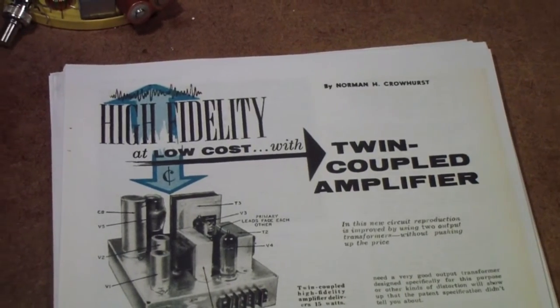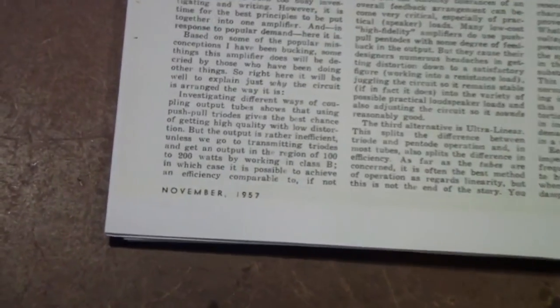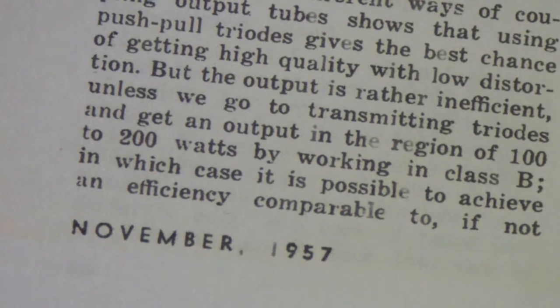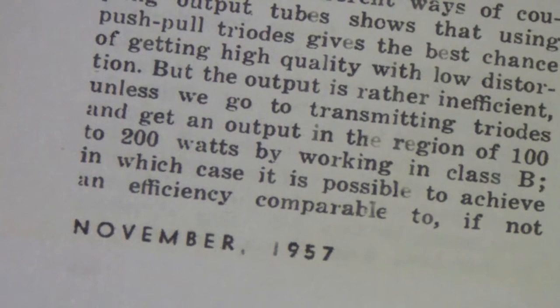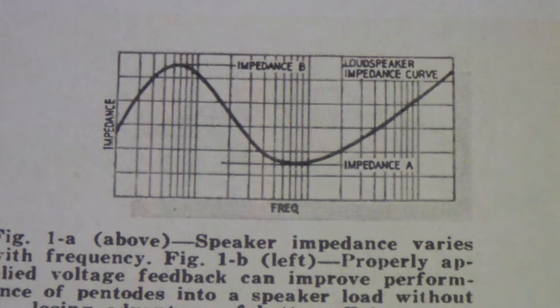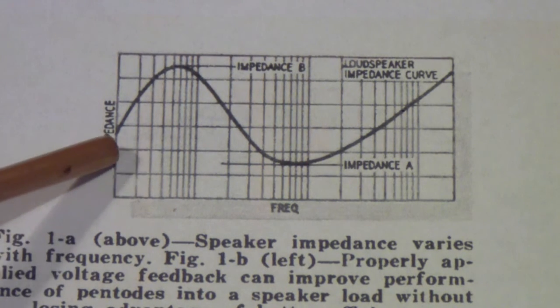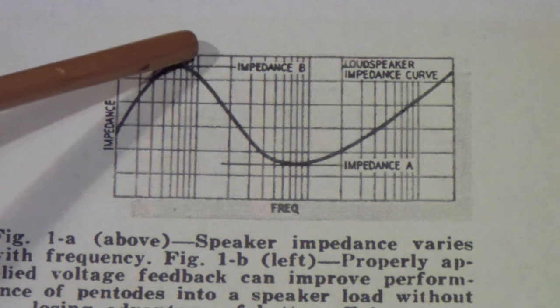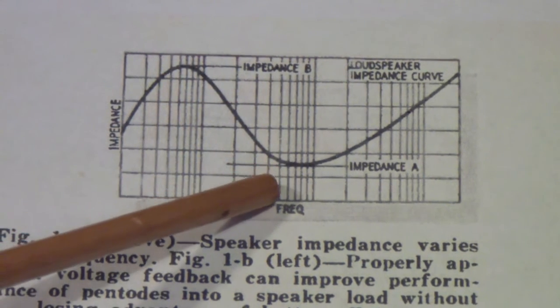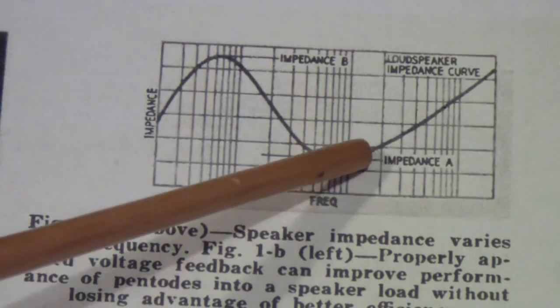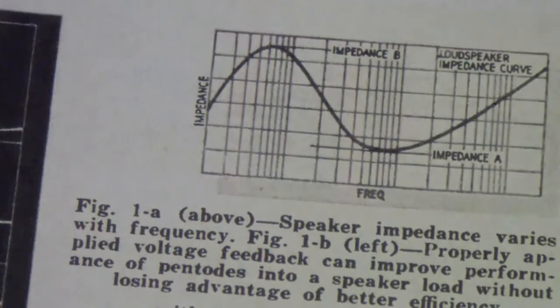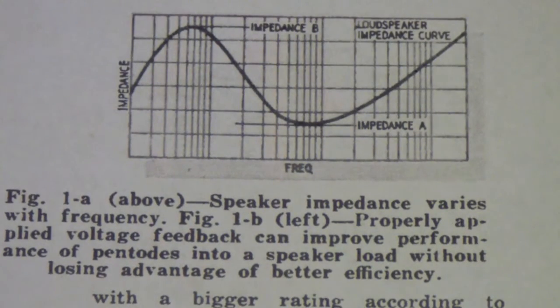So now let's look at twin-coupled amplifiers in a little more detail. Once again, if you're interested in getting this particular one, it's the November 1957 issue of Radio Electronics. Here is an example of an impedance curve for a typical loudspeaker connected to an amplifier. You'll notice that at low frequencies there tends to be a resonant peak where the impedance goes up, then you pass that resonant frequency and it drops off, and then the inductance of the voice coil begins to take over and it continues to rise after that. Now, as Norman Crowhurst points out in his article on the twin-coupled amplifier, proper voltage feedback can help to correct for this.